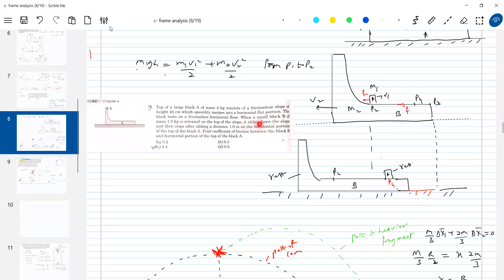When a small block slides down the slope and then stops after sliding a distance 1 meter on the original portion of the top of the block, how to interpret this particular thing? So what to take that 1 meter here.